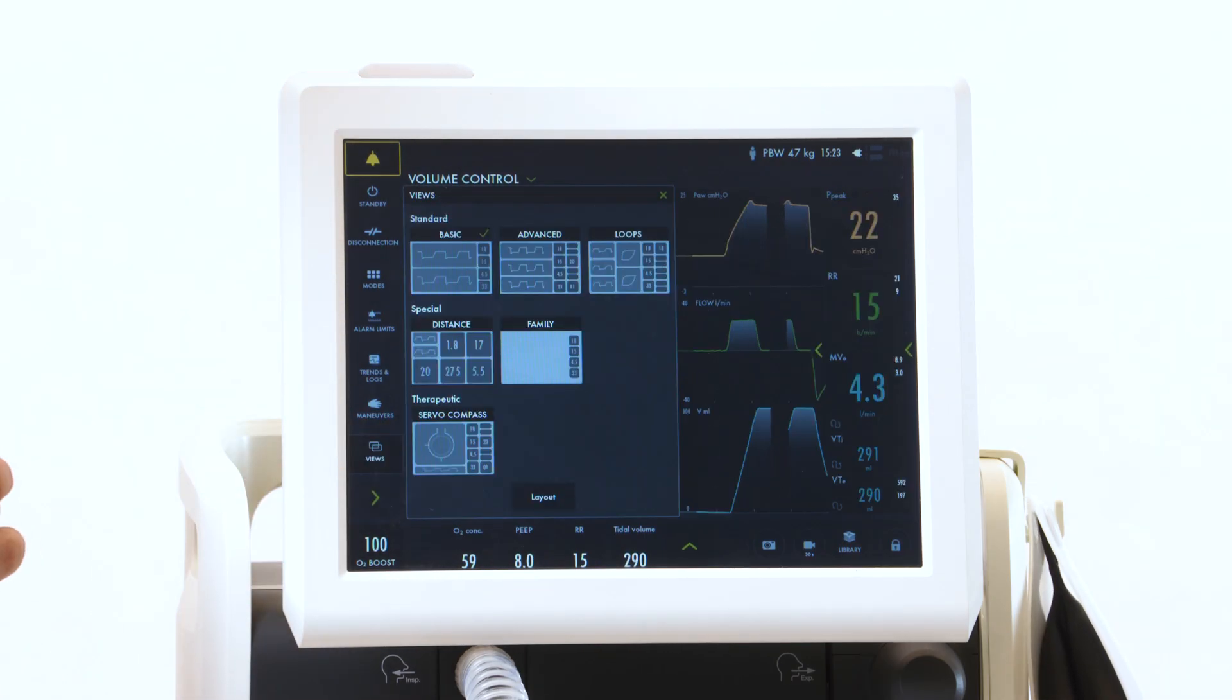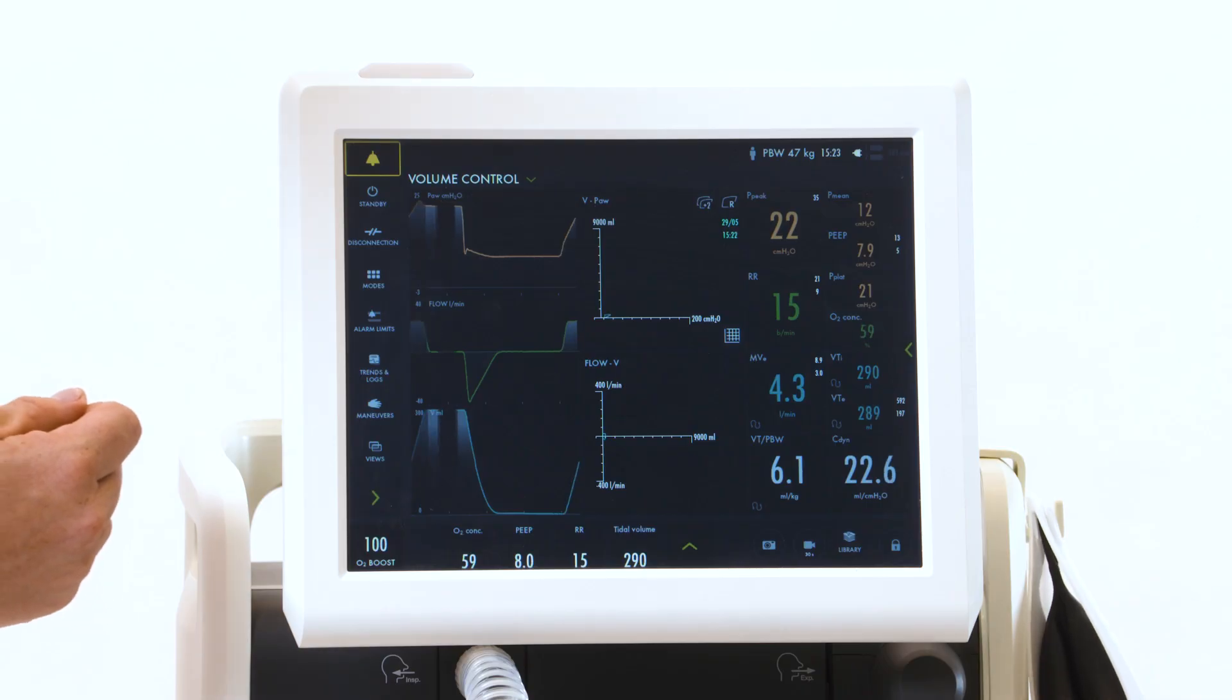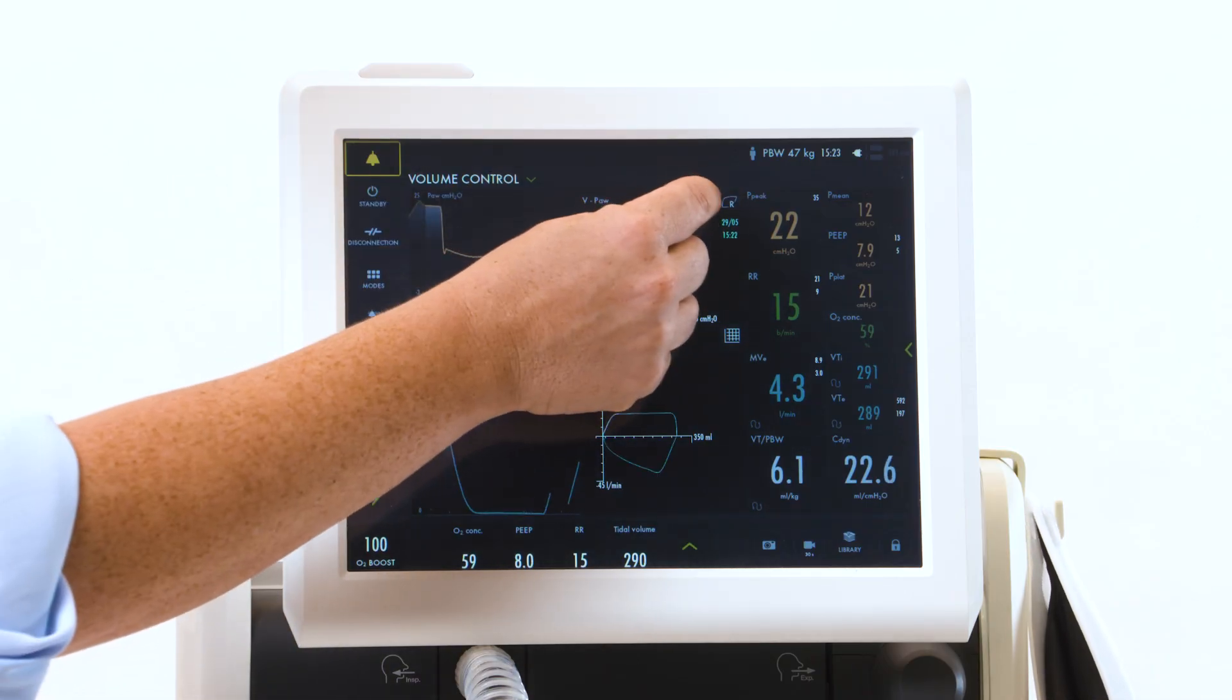Looking again at your views, you have a loop screen. Your loop screen will show your loops, which you can also have reference loops noted up here. Just touch to activate.